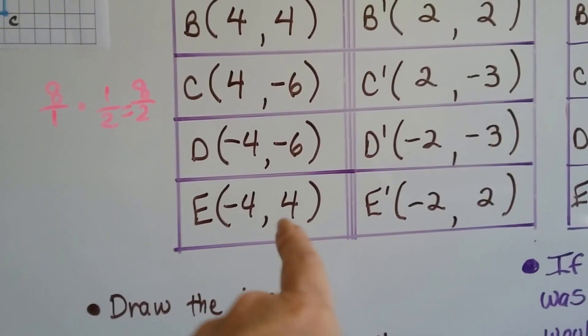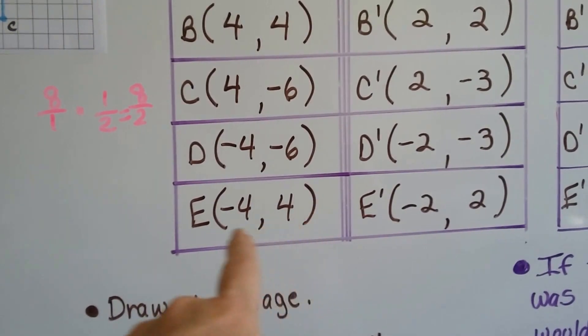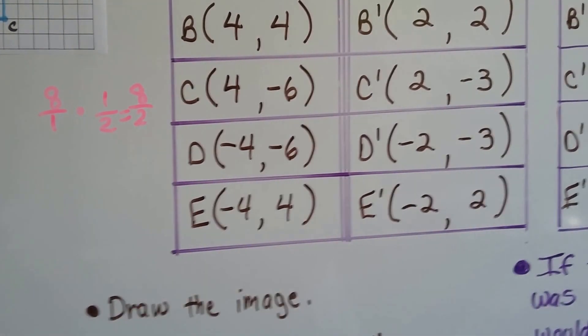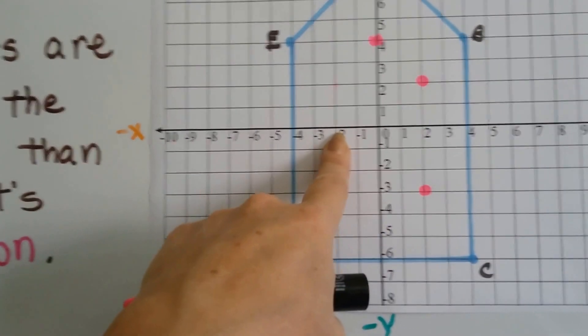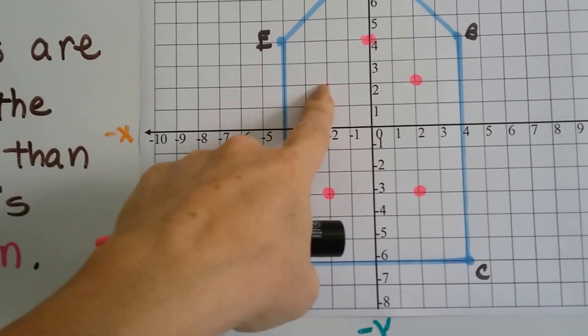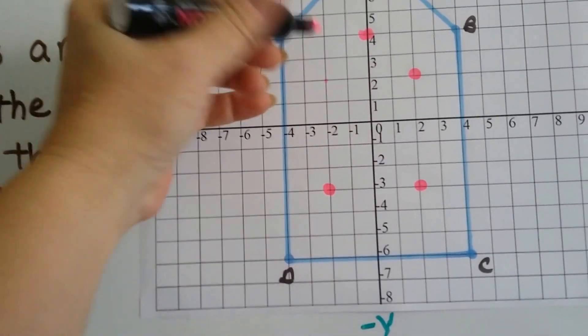E prime is going to be at negative 2, 2. Because it's half of negative 4 and 4. So we've got negative 2 and 2. So negative 2 for x is here. And 2 on y is positive. So it's here.